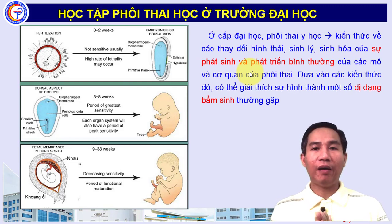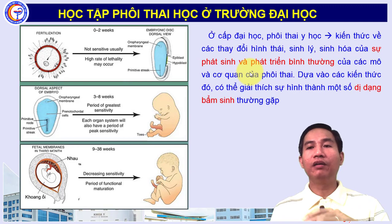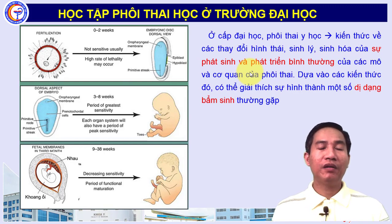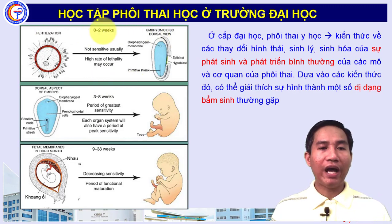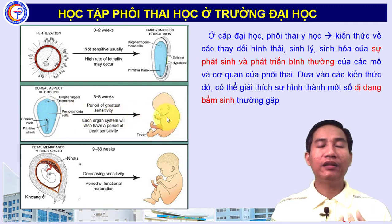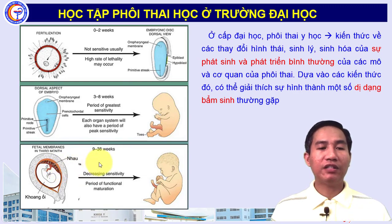Về học tập phần phôi thai học ở trường đại học: phôi thai học cung cấp kiến thức về sự thay đổi hình thái, sinh lý, sinh hóa của sự phát triển bình thường và bất thường của các mô, cơ quan trong cơ thể, giúp giải thích sự hình thành một số dị dạng bẩm sinh thường gặp. Có ba giai đoạn: tiền phôi (2 tuần đầu, từ thụ tinh đến đĩa phôi 2 lá), phôi (tuần 3-8, hình thành các mầm cơ quan), và thai (tuần 9-38, các mầm cơ quan hoàn thiện thành em bé được sinh ra).